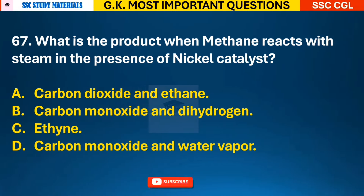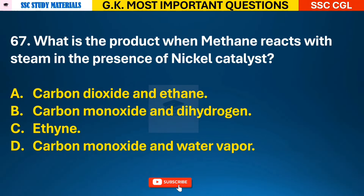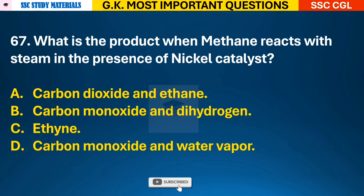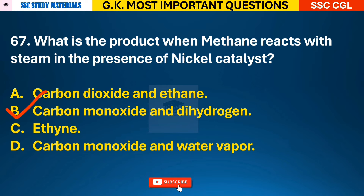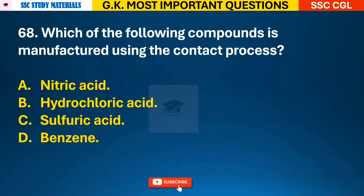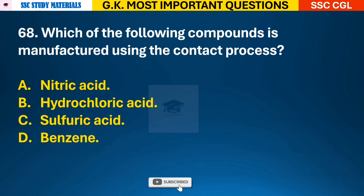Question 67: What is the product when methane reacts with steam in the presence of nickel catalyst? Answer B - Carbon Monoxide and Hydrogen. Question 68: Which of the following compounds is manufactured using the contact process? Answer C - Sulphuric Acid.